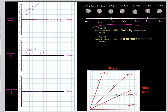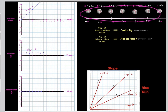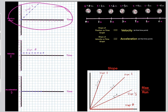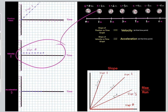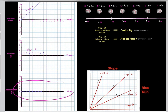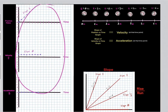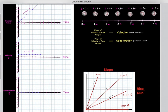All of these graphs represent the motion of this baseball. The only difference is each graph focuses on a different variable: position versus time, velocity versus time, and acceleration versus time. As long as you memorize these two rules, you know how to convert these graphs.